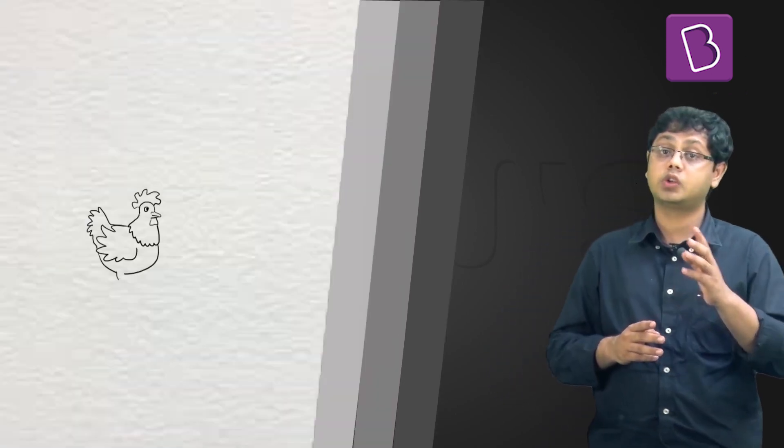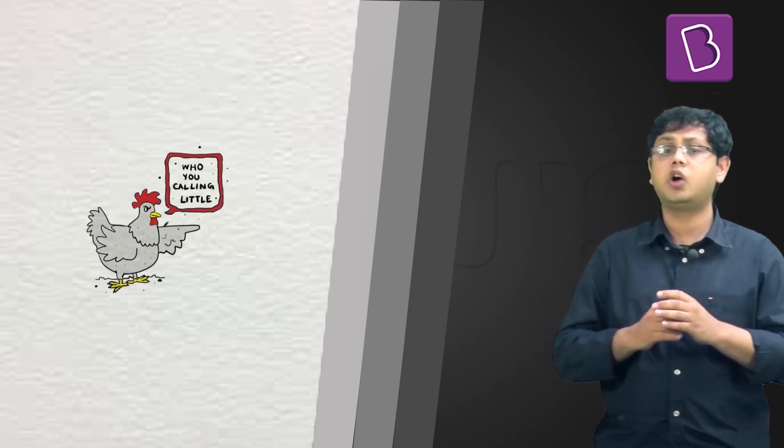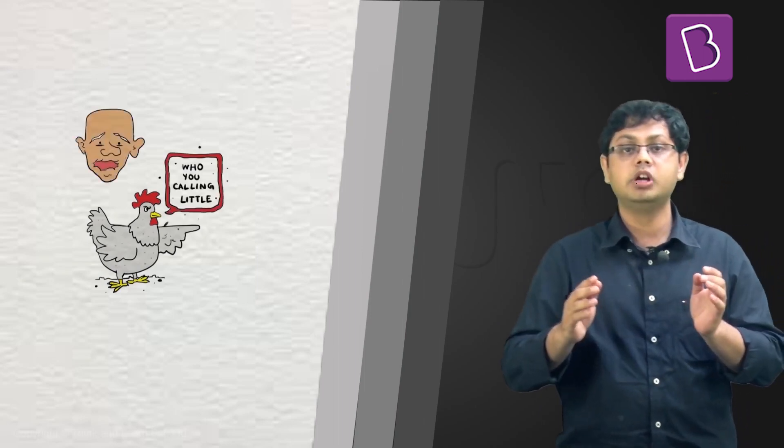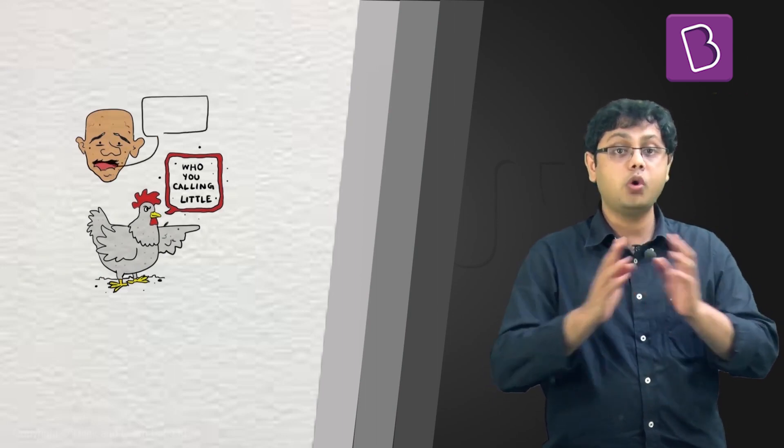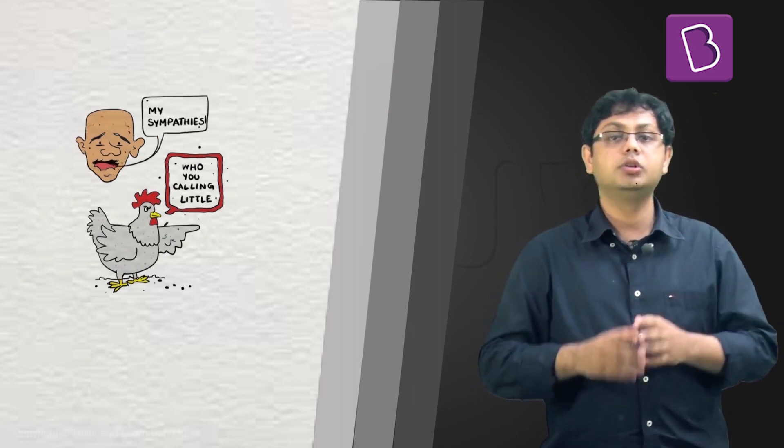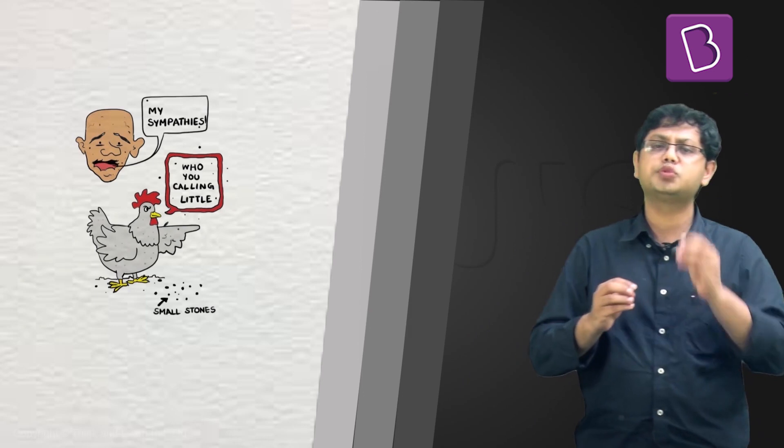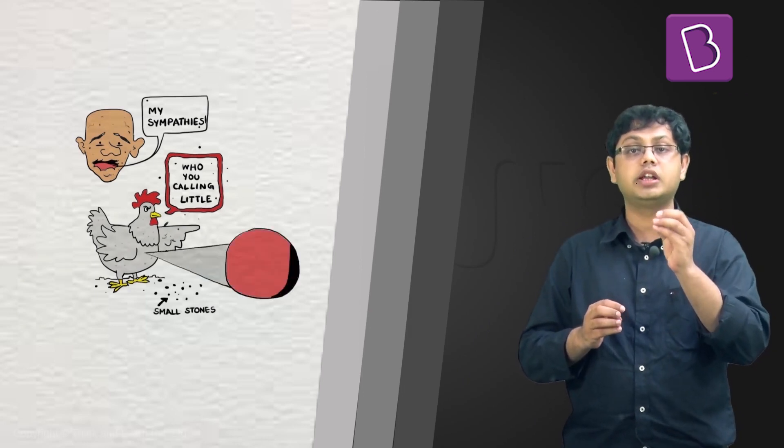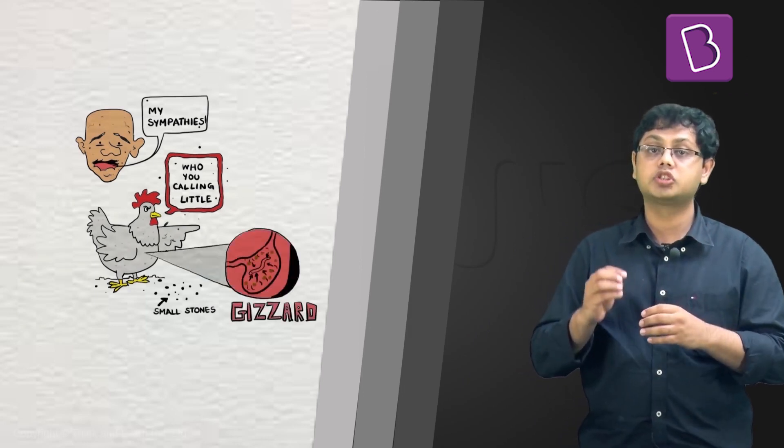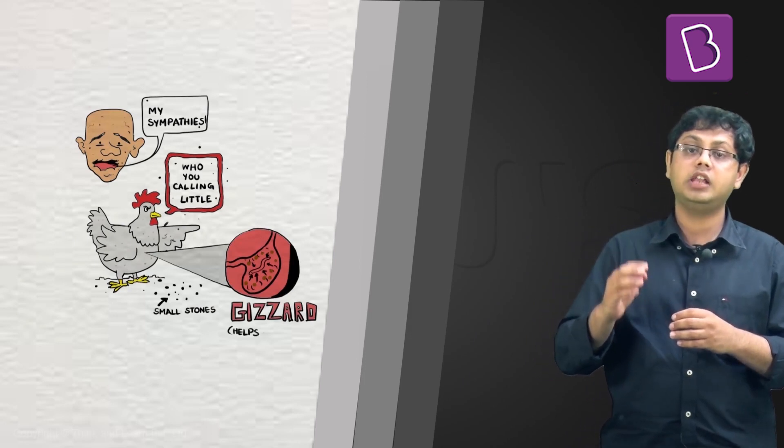And you'll never guess what chickens do to help themselves with digestion. These little birds have evolved a completely new system because they don't have any teeth. To make up for the lack of teeth, they swallow small stones which are stored in an organ called the gizzard. These small stones help grind the cereals that they eat.